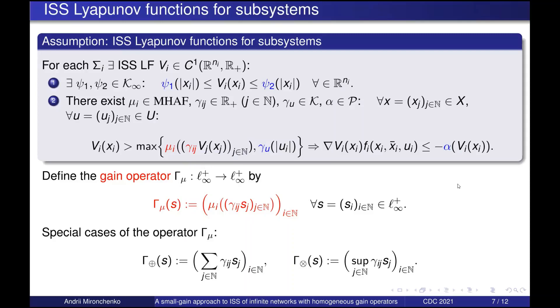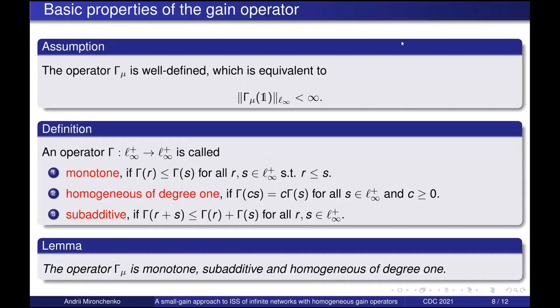Let us see the properties of this operator. First of all we assume that it is well defined, which is the same as to say that this condition holds. But also since all mu_i's, all those aggregating functions are homogeneous and subadditive, we obtain that also the gain operator is monotone, homogeneous of degree one and subadditive.